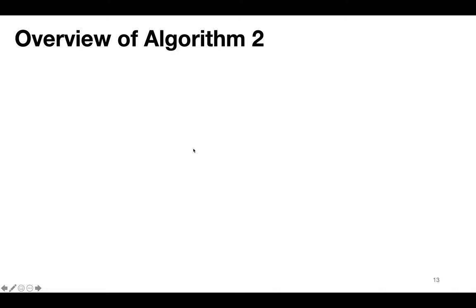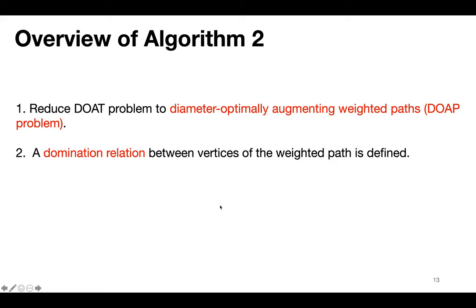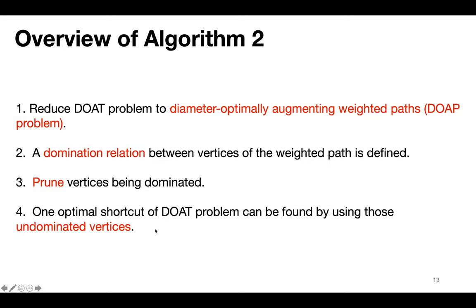Next, we introduce Algorithm 2. The first step is reducing the DOAT problem to the Diameter Optimally Augmenting weighted Path problem, referred to as the DOAP problem. Then a domination relation is defined for vertices of the weighted path, dominated vertices are pruned, and one optimal shortcut of the DOAT problem is found using the undominated vertices.